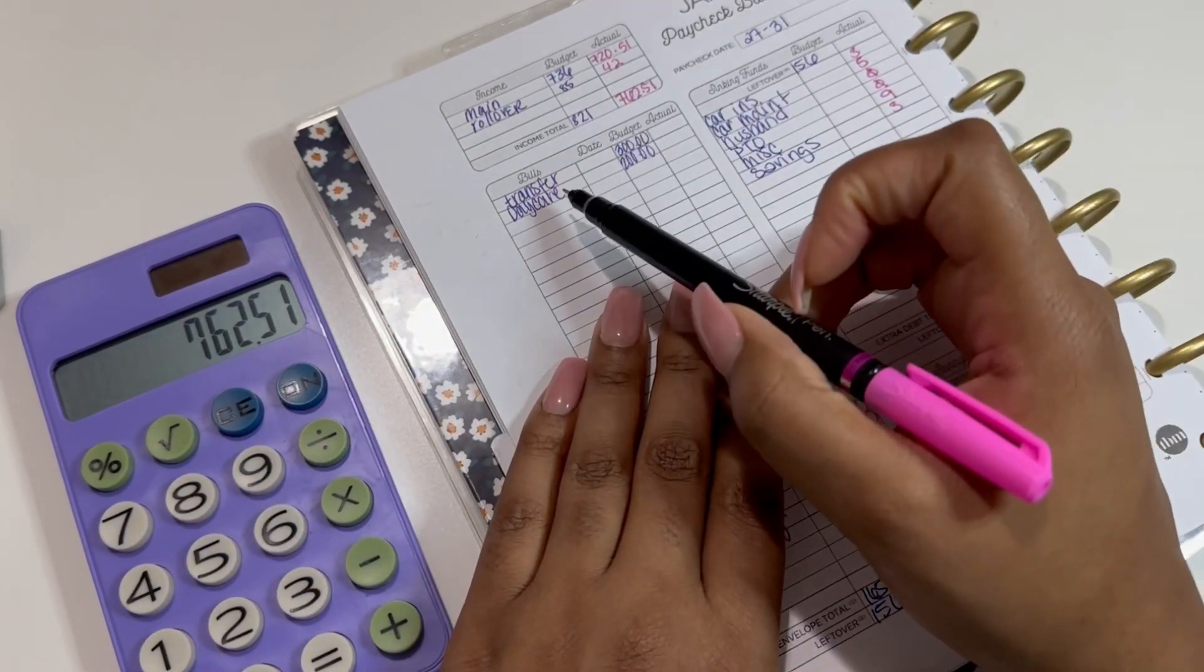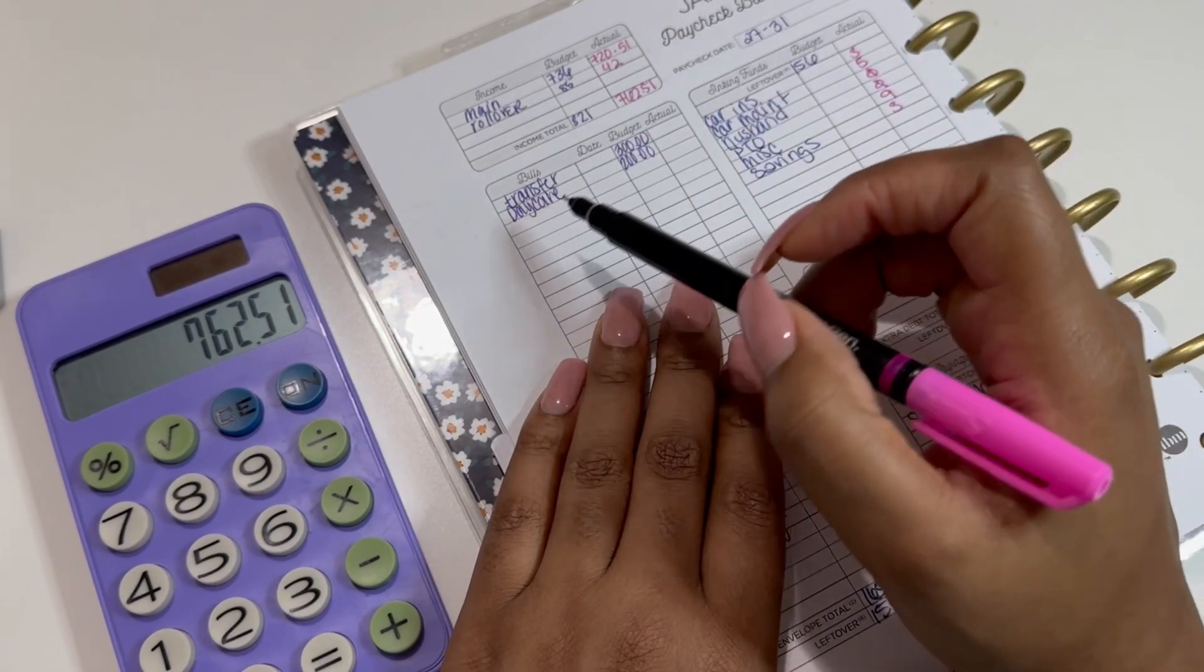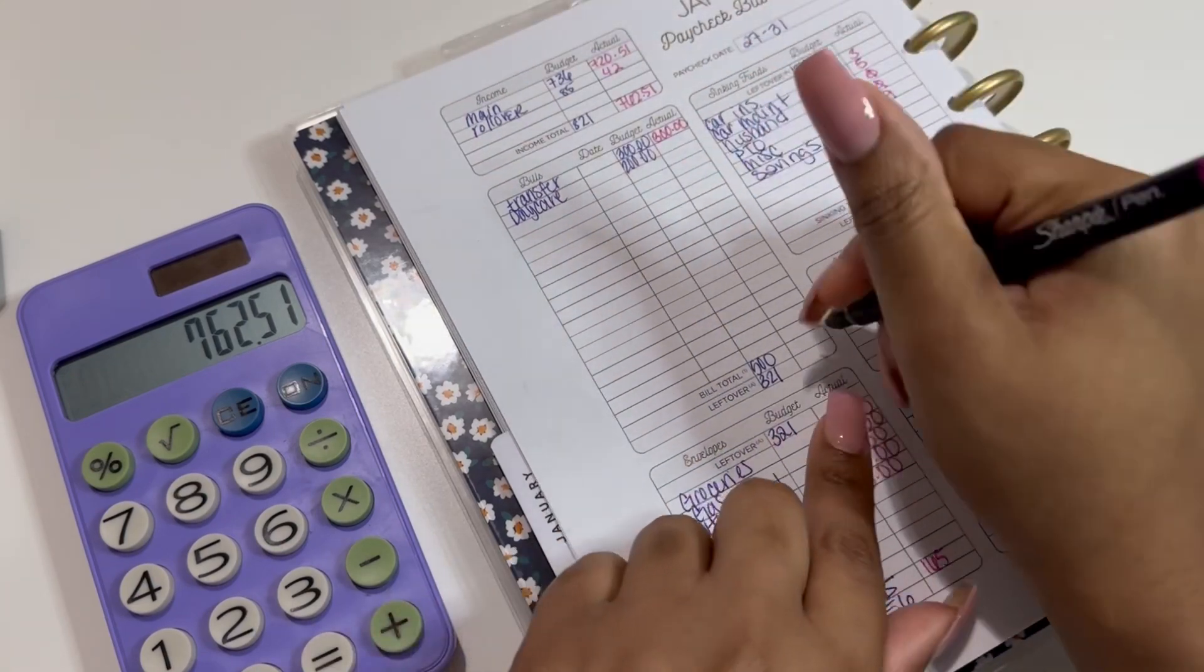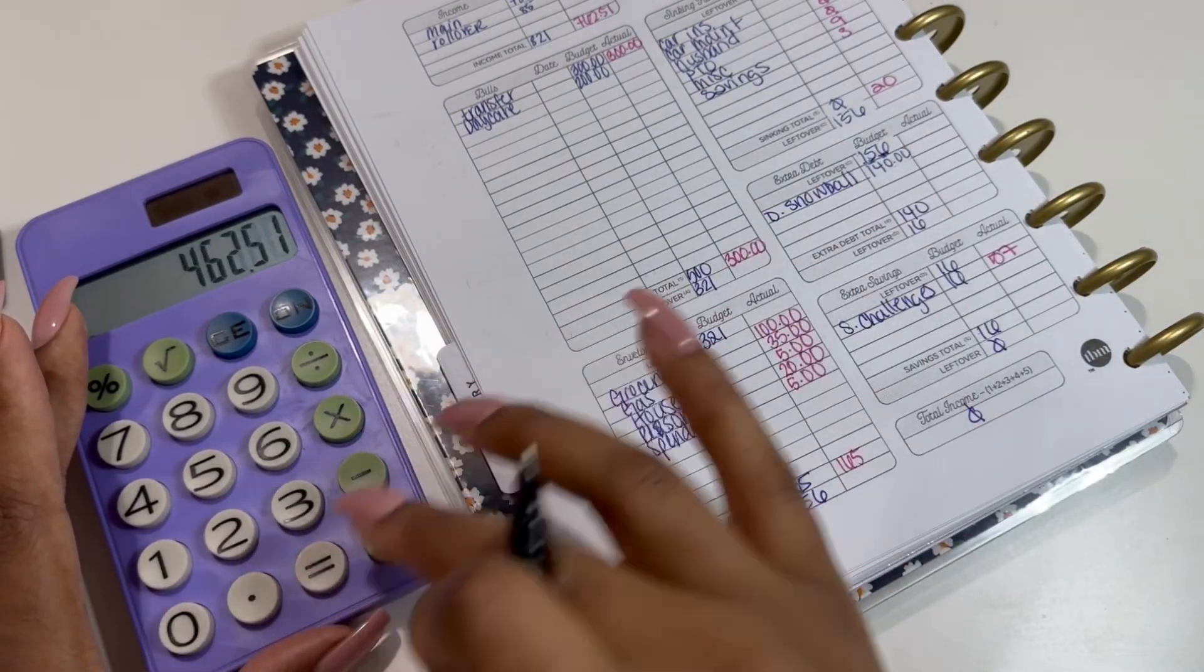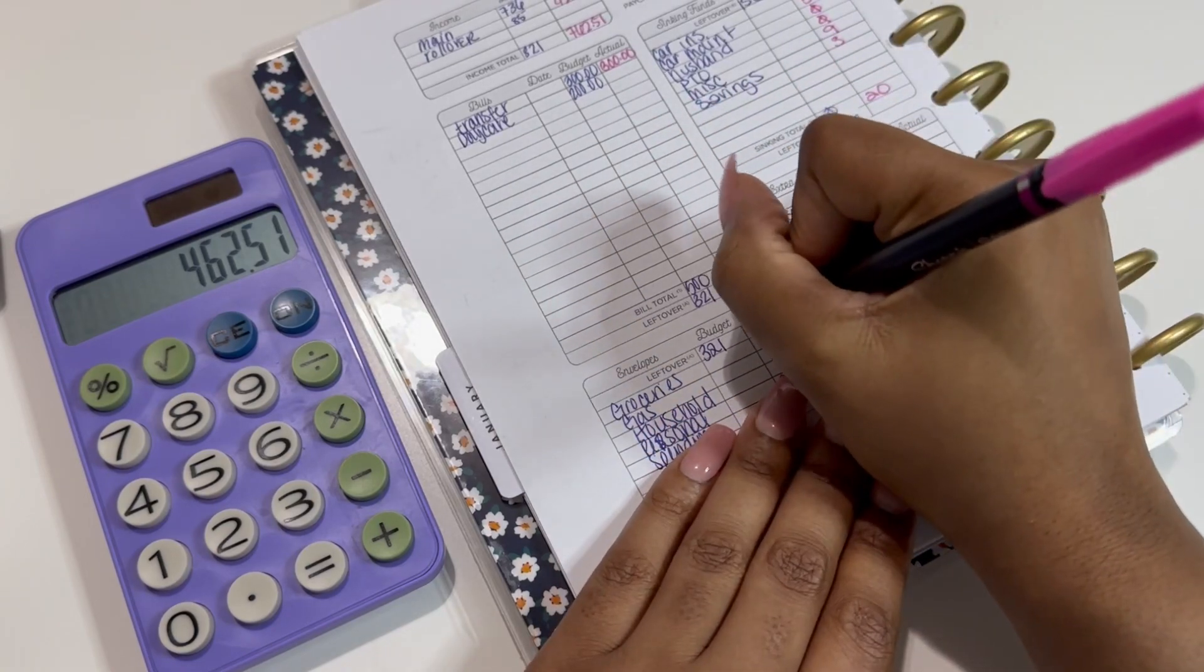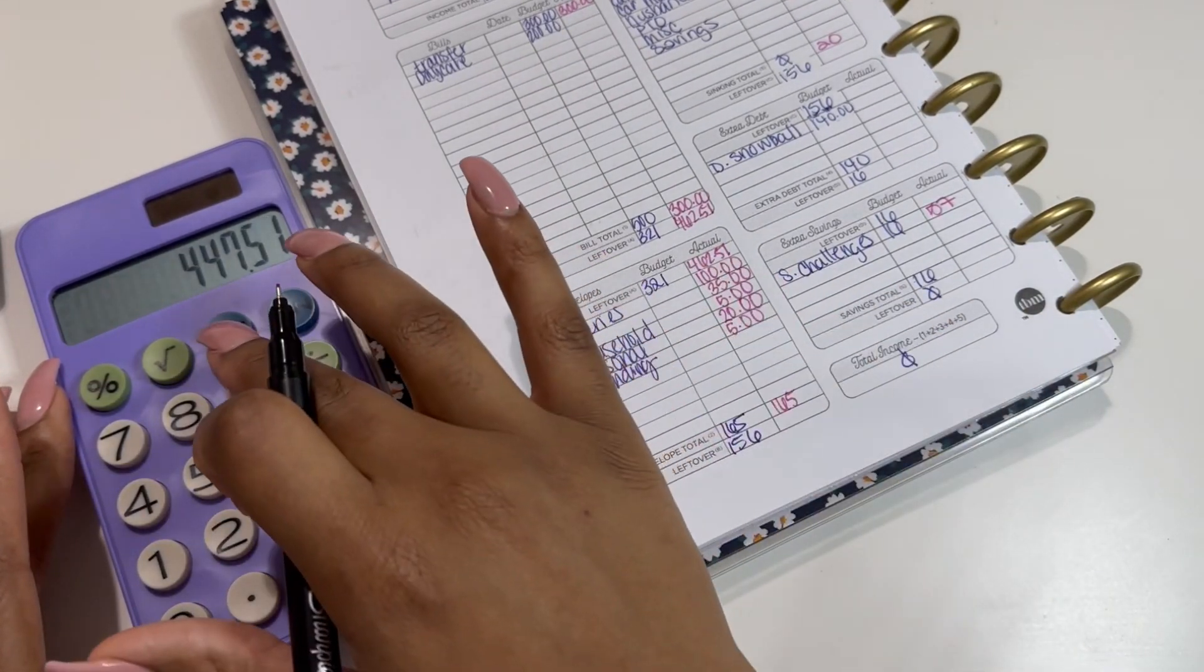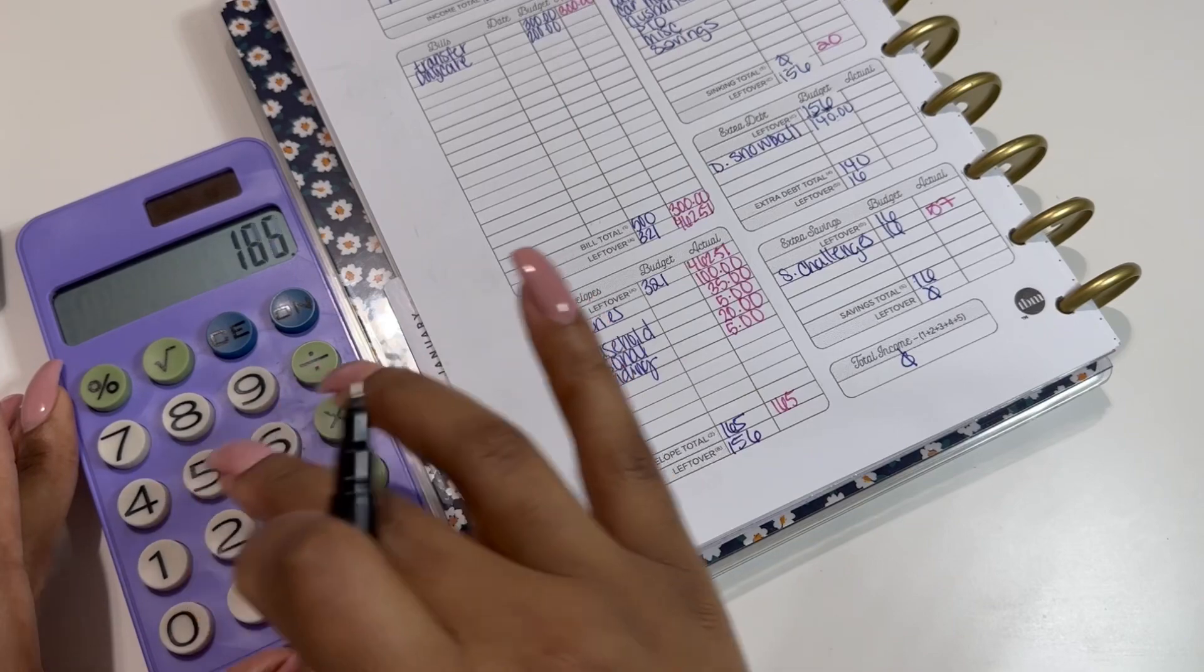I originally budgeted out 300 for my transfer and 200 for my daycare, but in my last paycheck I covered everything for daycare, so I am just looking at what I budgeted for my transfer, which was 300. That was 300, and we are going to subtract that from my income, which brings me to 462.51 to roll over to my cashless cash envelopes. I already stuffed these at 165, so we're gonna minus 165.